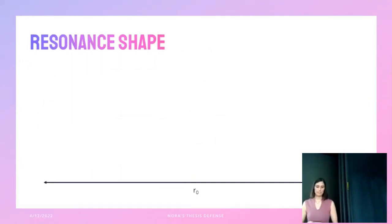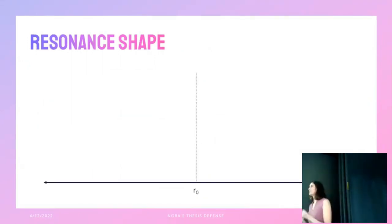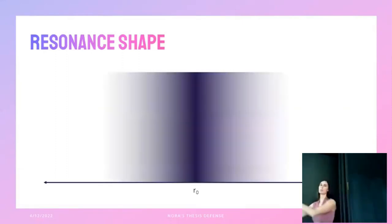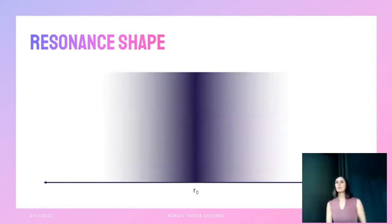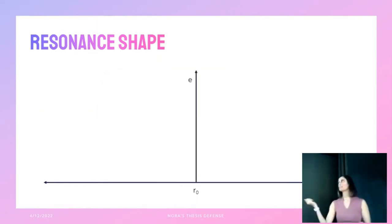The period ratio distribution for the entire Kepler multi-planet sample shows a lot of sculpting. Rather than looking at the whole distribution, we focused on small regions around these two second-order resonances. Why? Because the resonance has a width — the period ratio doesn't have to be exactly three for planets to be in the three-to-one resonance. And for second-order mean motion resonances, this width depends on the eccentricity of the planets: it gets wider as eccentricity gets higher.